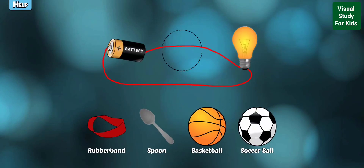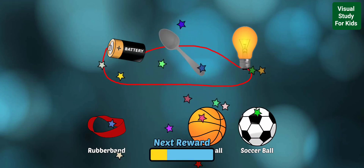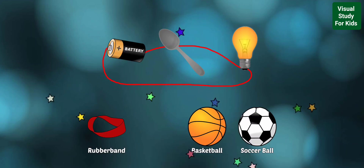Drag the object that is a conductor so the light bulb stays on. Yes, that object is a conductor because it will allow electricity to flow freely, which keeps the light bulb lit.